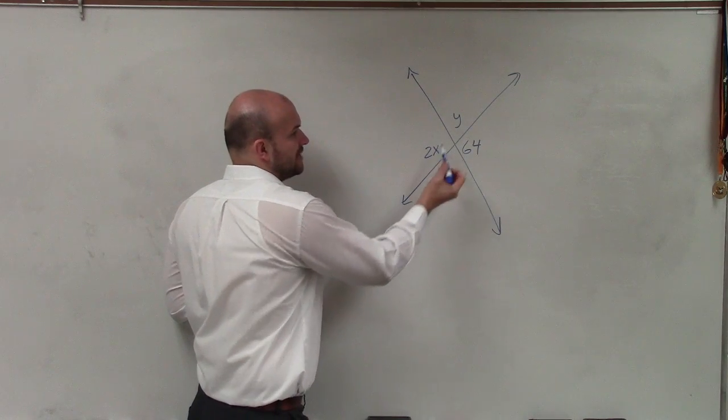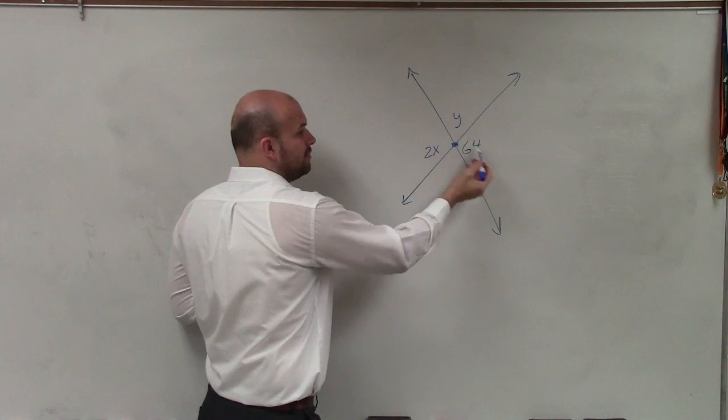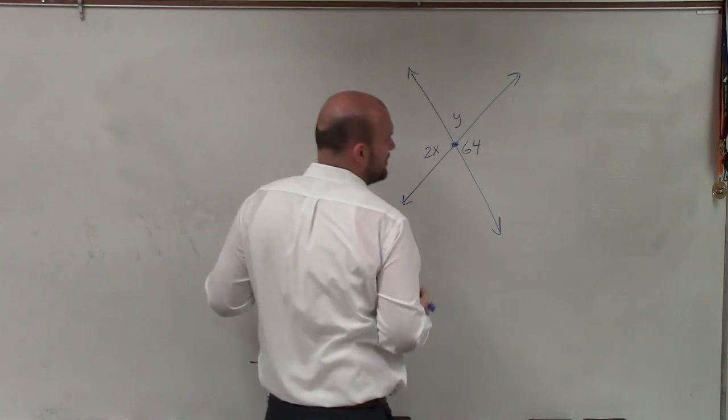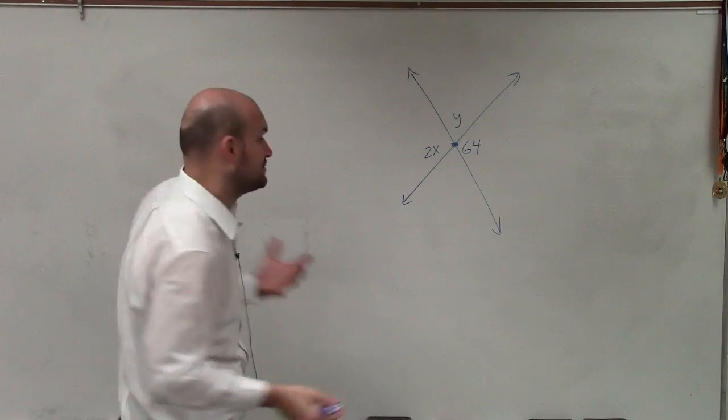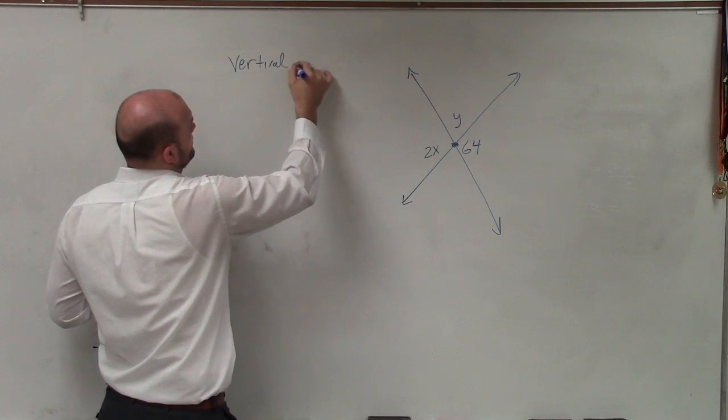So remember, vertical angles are two angles that are directly across from each other from the intersection of two lines, and those measures equal each other. So therefore, I can say 2x and 64 are vertical angles. Therefore, they're equal in measure. So I'm going to say vertical angles.